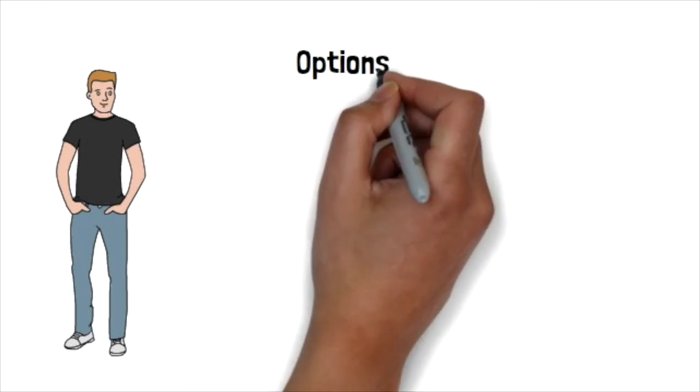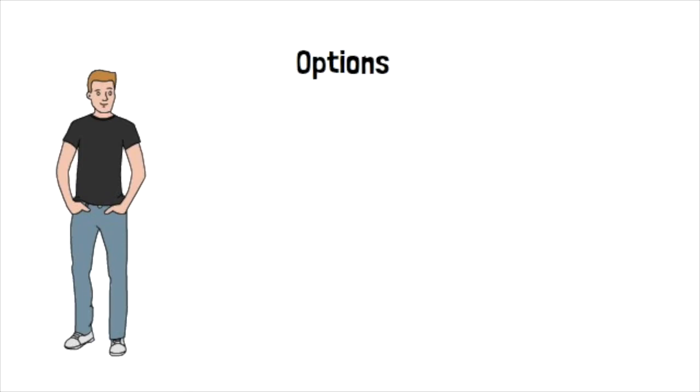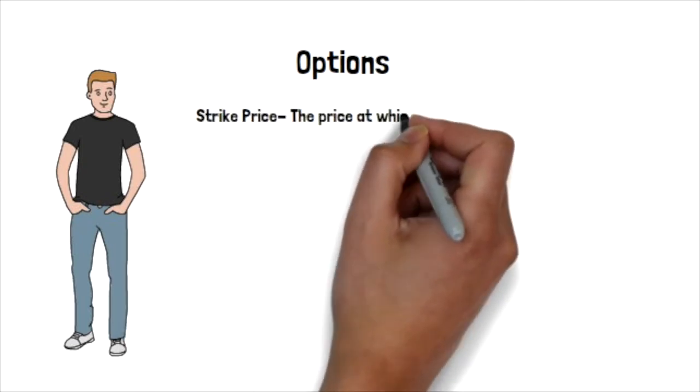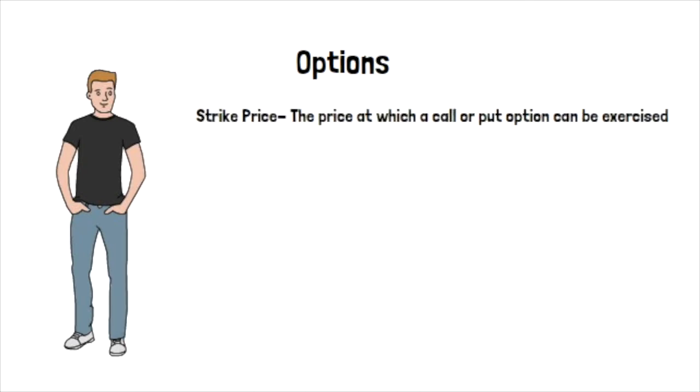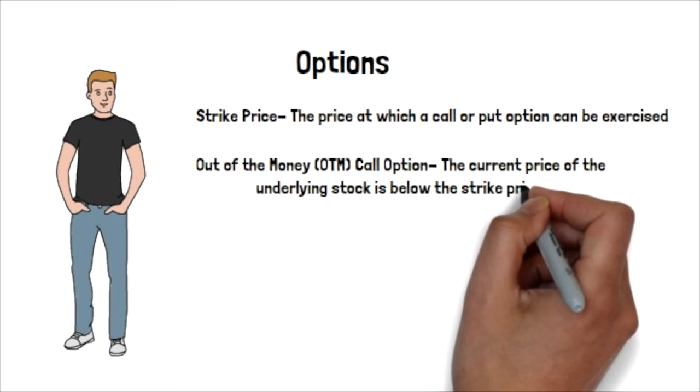Options have a strike price. And when the price of the underlying stock is below the strike price, the option is deemed out of the money. And when the price of the stock is above the strike of the call option, it is deemed in the money. When you sell a call option, you receive a small premium.